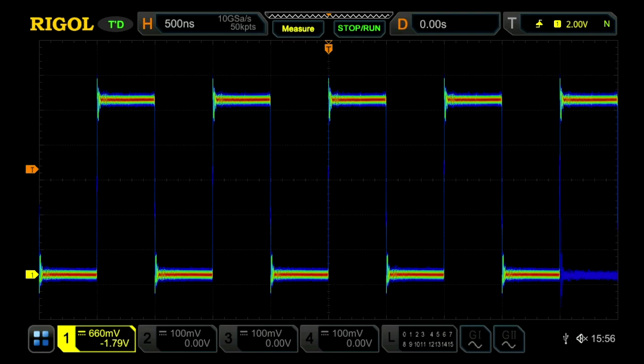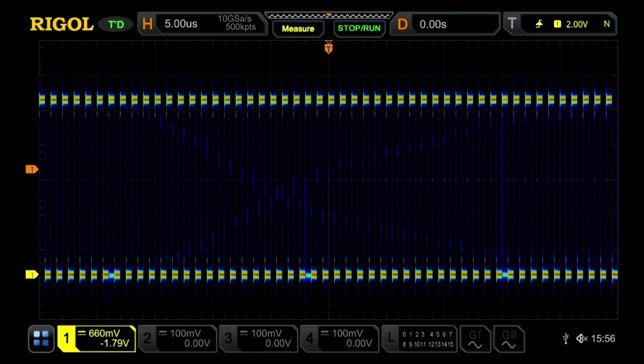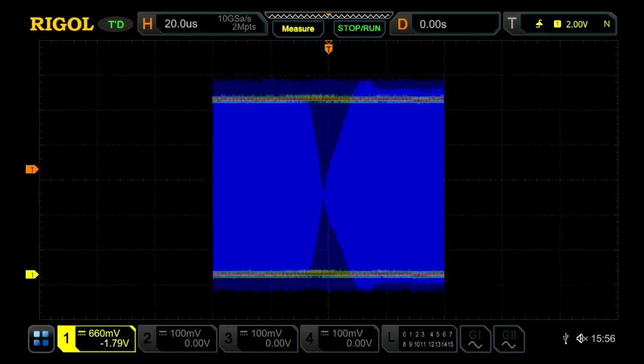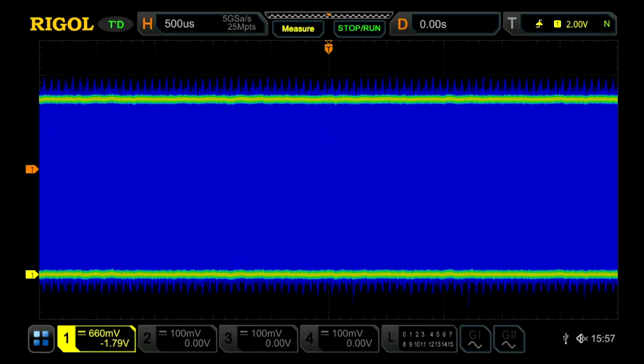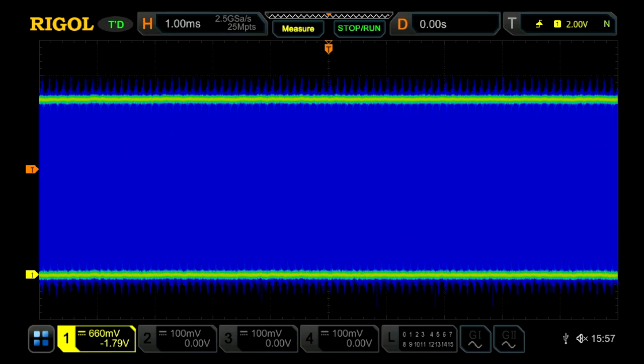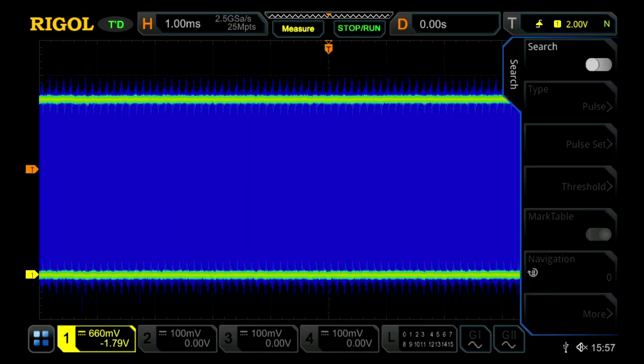Here we have a one megahertz signal that occasionally has a little dropout on it. You can see it moving across the screen. We really want to learn today how often that's occurring. So let's move out to one millisecond per division. There's a lot of data, a lot of waveforms on that display. Now let's activate the search mode.